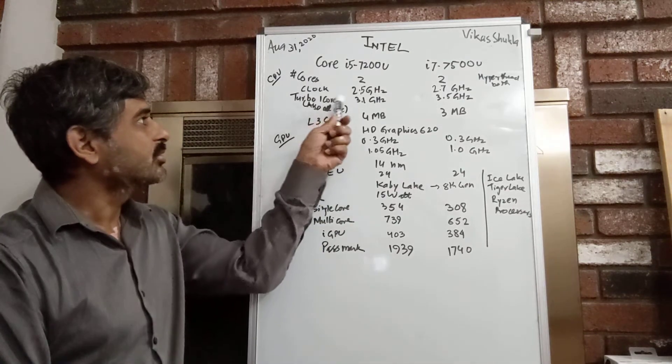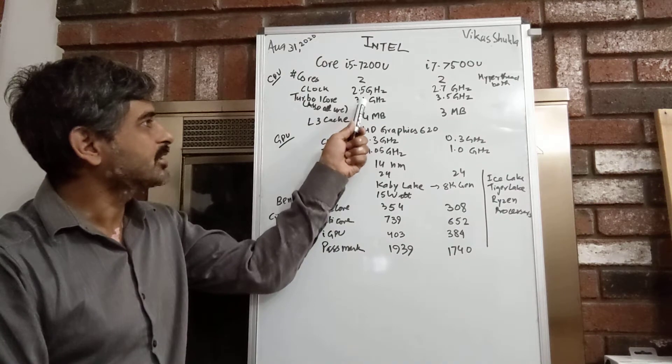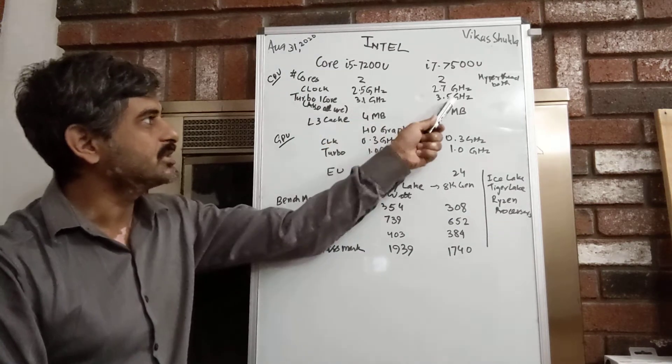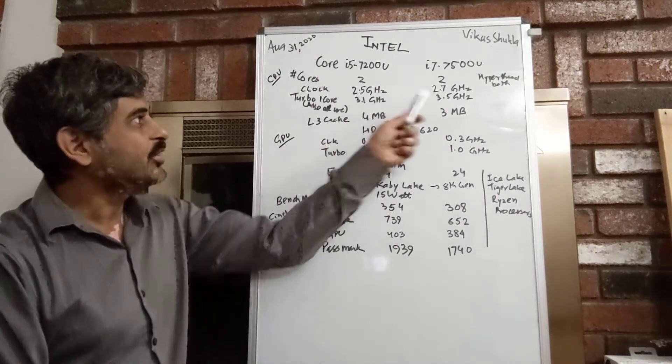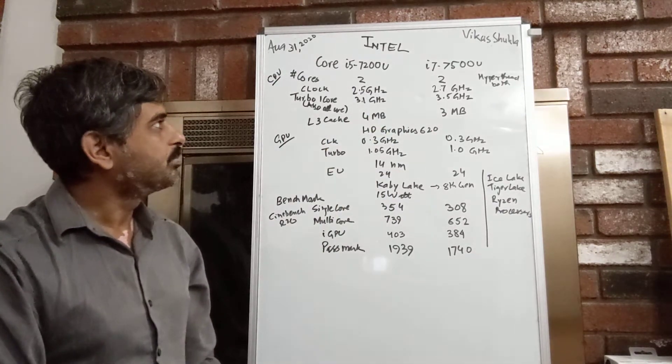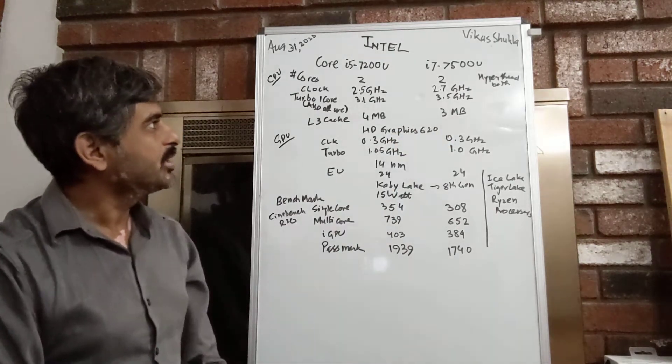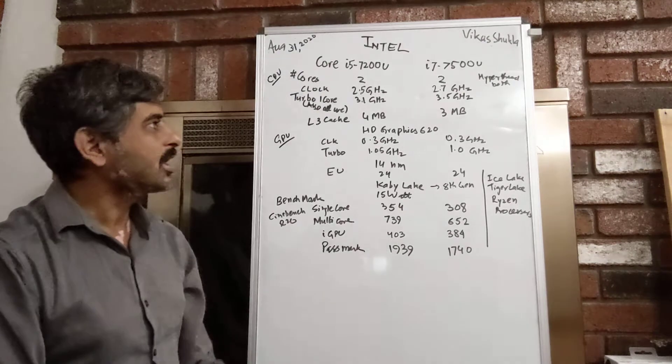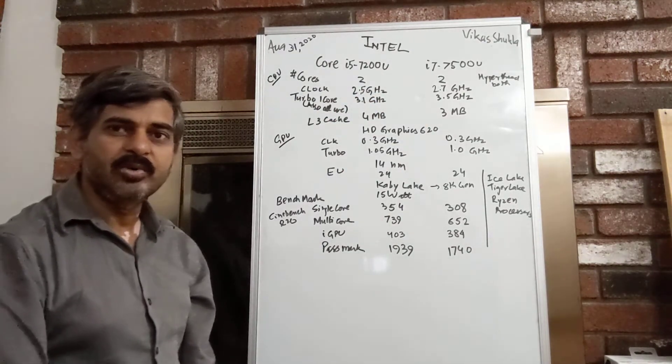When you go into the turbo clock, if you look at the turbo clock frequencies, it's 3.1 gigahertz versus 3.5 gigahertz. The difference here gets a little larger, like 400 megahertz, which will be a little higher than the normal clock frequency difference.